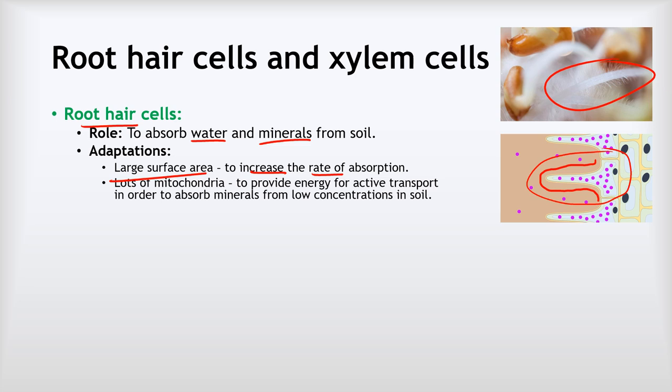The second adaptation is they contain lots of mitochondria. Why is that? The concentration of mineral ions in the soil is much lower than the concentration of mineral ions in the root hair cell itself. Therefore, in order to get those mineral ions into the root hair cell, we need to use active transport, because that's required to move substances up a concentration gradient. In order to power that active transport, we need lots of mitochondria to provide the energy for it.